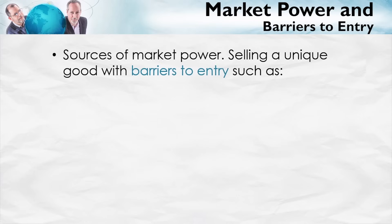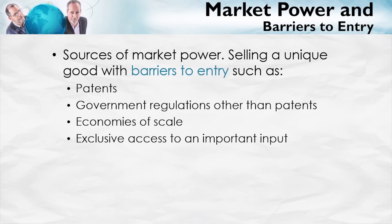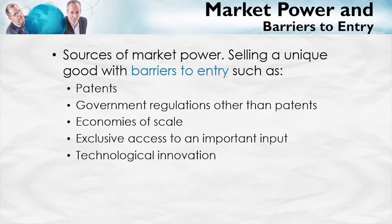A firm has market power when it's selling a unique good and there are barriers to entry — forces which prevent competitors from entering the market. Barriers to entry include patents, other government regulations such as exclusive licenses, and economies of scale, which mean a single large firm can sell at lower cost than many small firms. Exclusive access to an important input also matters: diamonds, for example, are found in only a few places, so controlling those mines gives market power. Technological innovations can also give a firm temporary market power.